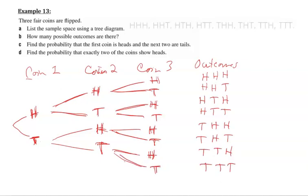So this is our sample space. These are all the possible outcomes. How many possible outcomes are there? 1, 2, 3, 4, 5, 6, 7, 8. There are 8 possible outcomes.